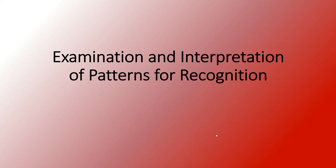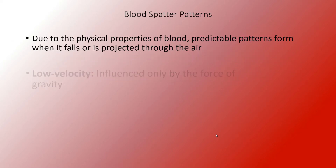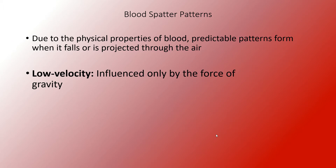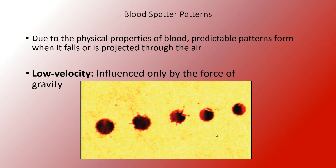I want to start off with talking about the different velocities of spatter and how each of them looks different. With low velocity, it's only influenced by gravity and also slow movements. What you're going to see with low velocity is a much more rounded droplet. Typically you view low velocities being dropped from approximately a 90 degree angle — that's what creates this nice round droplet.